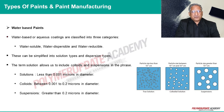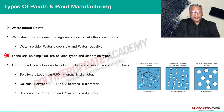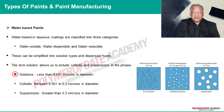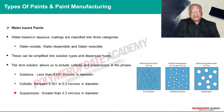Water-based or aqueous coatings can be divided roughly into three types: water-soluble, water-dispersible, and water-reducible — simplified into solution types and dispersion types. In solution, the particle size is less than 0.001 microns in diameter. In colloids, the particle size is between 0.001 to 0.2 microns. In suspensions, the particle size is greater than 0.2 microns in diameter.